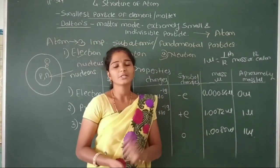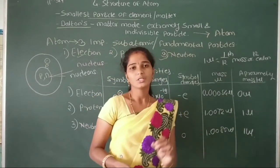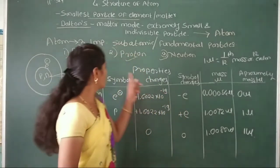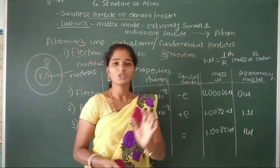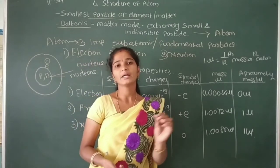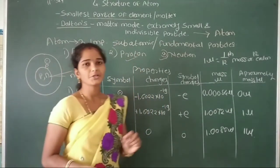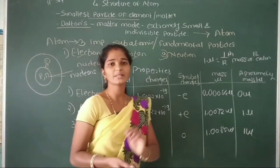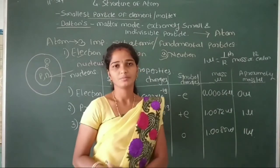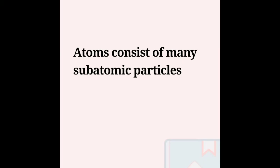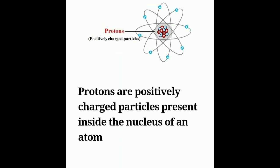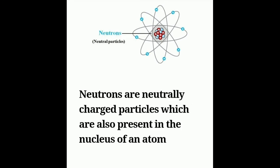In the next lecture, we will learn about the discovery of these 3 sub-atomic particles. We remember that electrons were discovered by scientist J.J. Thomson in 1897. The proton was discovered by scientist Rutherford, and the neutron was discovered by scientist J.M. Chadwick. Thank you.